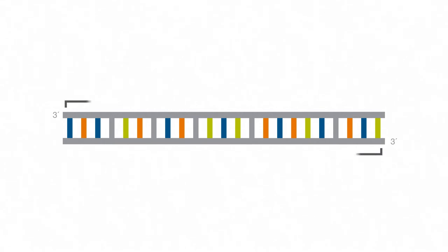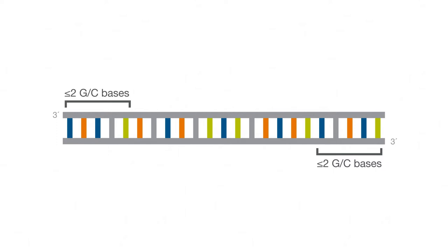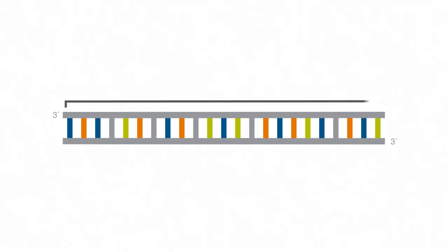The last five nucleotides at the three-prime end should include no more than two G or C bases to avoid specificity issues. Finally, the amplicon should be short, generally between 50 and 150 base pairs.